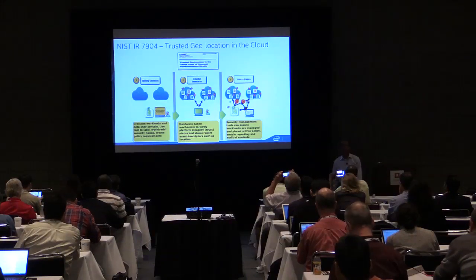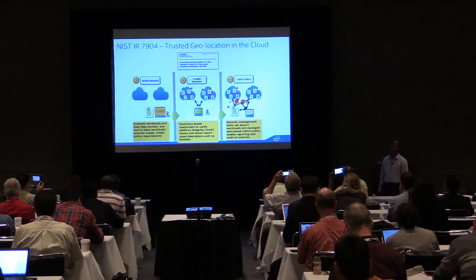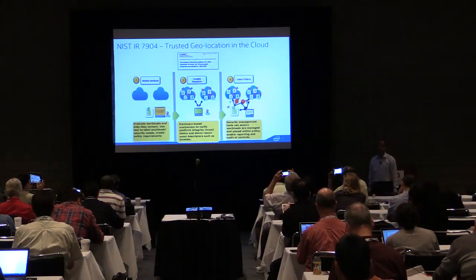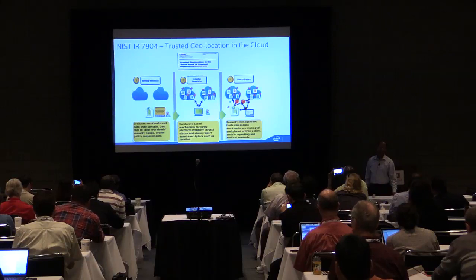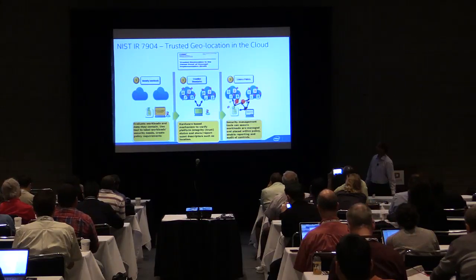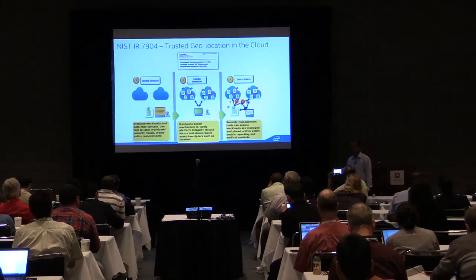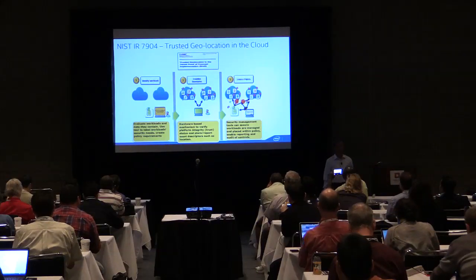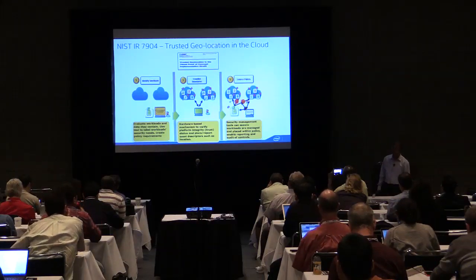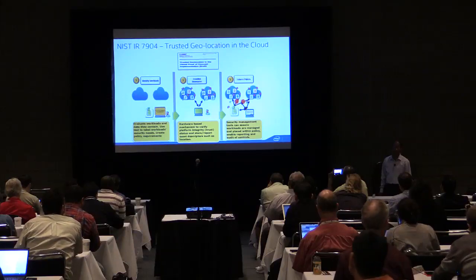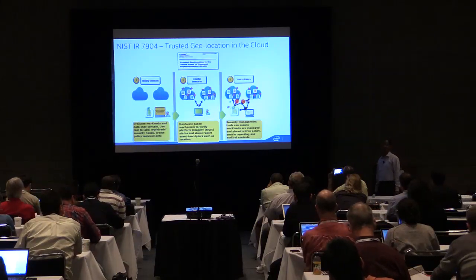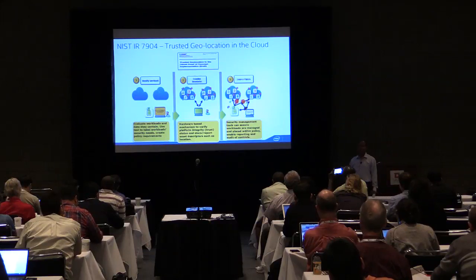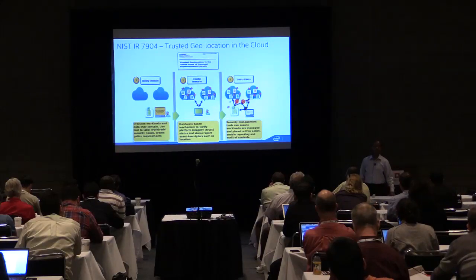NIST has a publication called IR 7904—IR stands for interagency report. This specifically talks about trusted geolocation in the cloud, using hardware root of trust for ensuring trust and ensuring geolocation, and it has proof-of-concept implementations of geotagging. It is currently built using the VMware ecosystem, but NIST is looking to update it very soon with an OpenStack version as well.